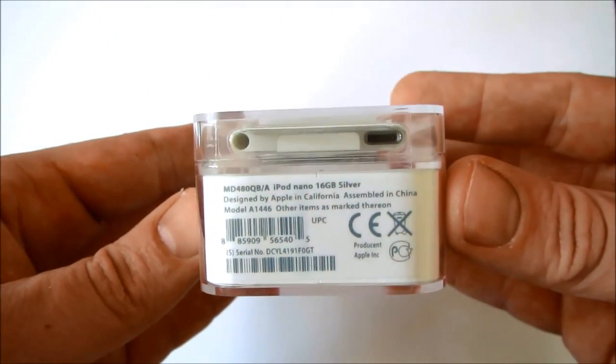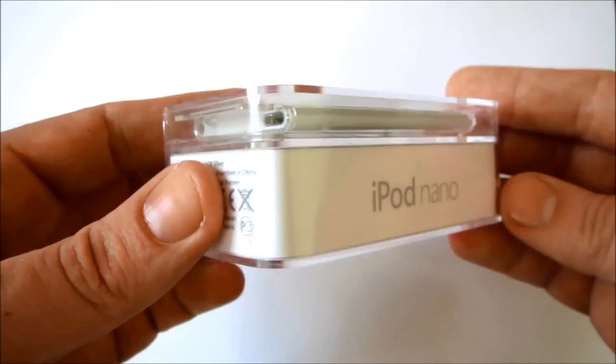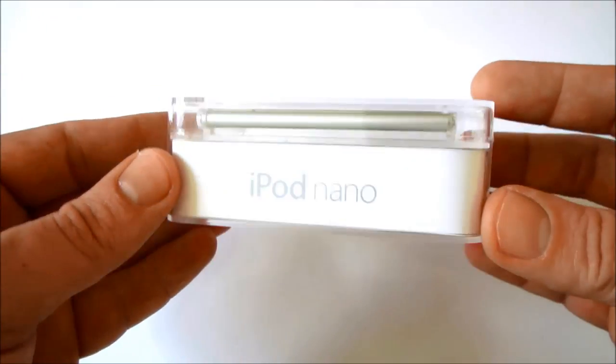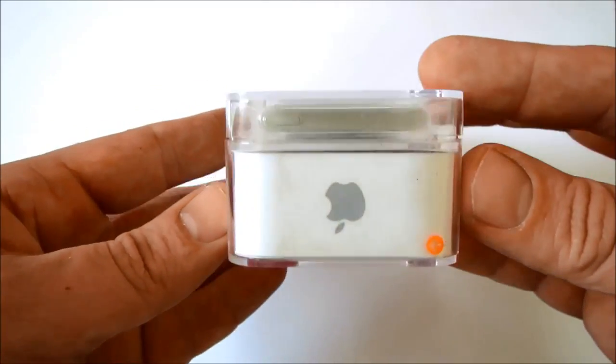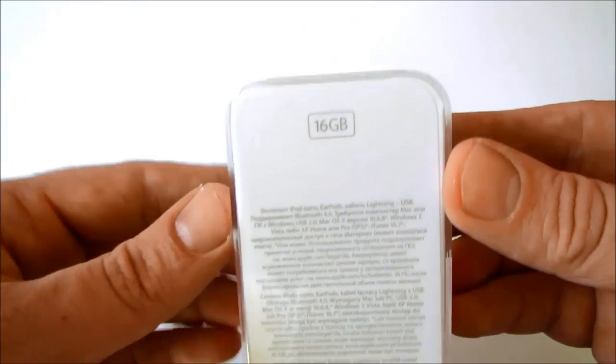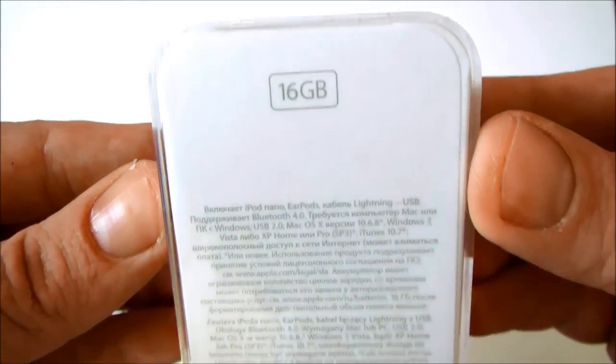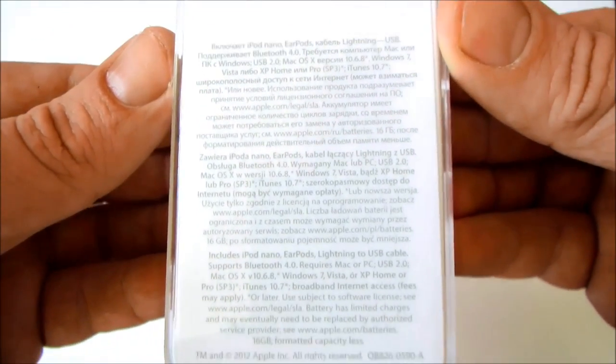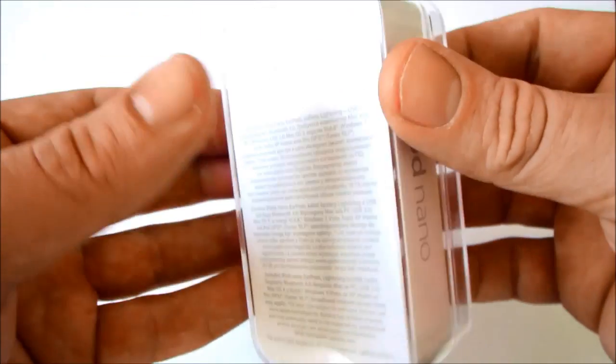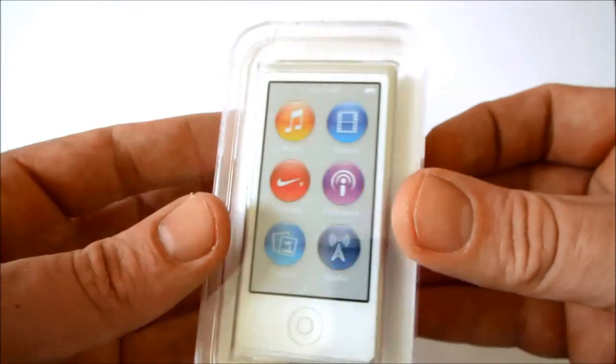The 2.5 inch multi-touch display is nearly twice as big as the display on the previous iPod Nano so you can see more of the music, photos and videos you love. Buttons let you quickly play, pause, change songs or adjust the volume. The smooth new anodized aluminum design makes iPod Nano feel as good as it sounds.